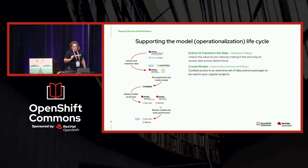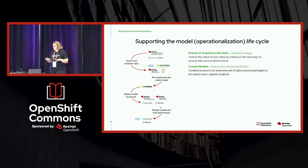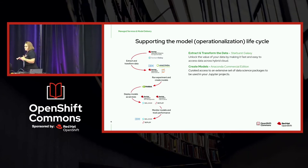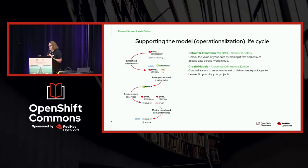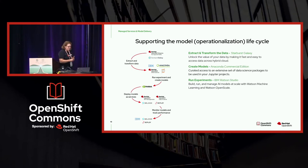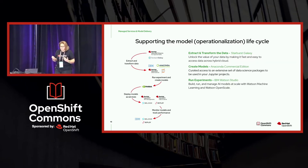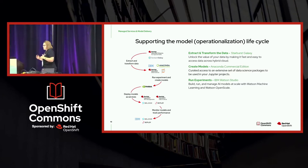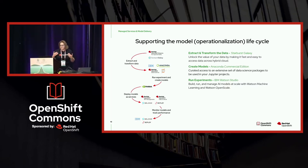For creating models, you might use a Jupyter notebook for exploration, but you might also be interested in what Anaconda has to offer — they have an extensive set of data science packages and libraries you can use in your Jupyter notebook projects. Another ISV is IBM Watson Studio: when you're doing experimentation, you can use IBM Watson Studio to manage your AI models at scale and see if there are any issues when trying to deploy them at scale.